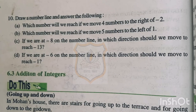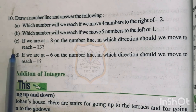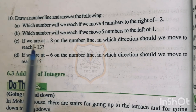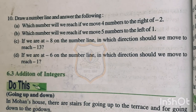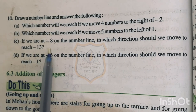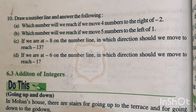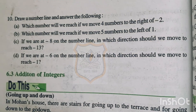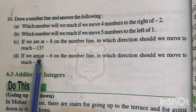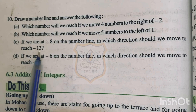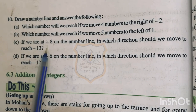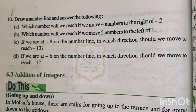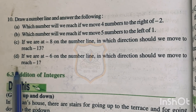Part B of question number 10, you have to do by yourself. Part C of question number 10: if we are at minus 8 on the number line, in which direction should we move to reach minus 13? We will move towards the left, as minus 13 is smaller than minus 8, and smaller numbers are towards the left side of the number line.